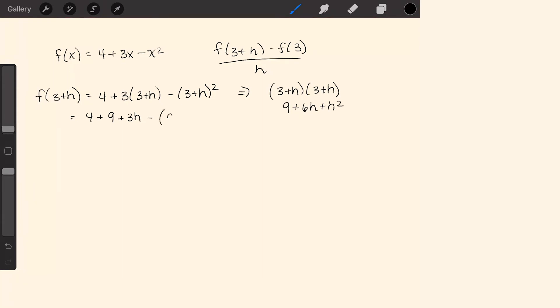So minus 9 plus 6h plus h squared. Simplifying this down, 4 plus 9 plus 3h minus 9 minus 6h minus h squared.